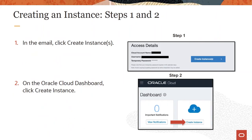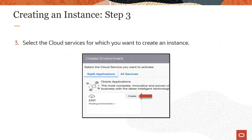In the email, you'll click Create Instance. You'll get to the dashboard where you can click again on Create an Instance. And in the cloud services, you'll select the services for which you want to create your instance.